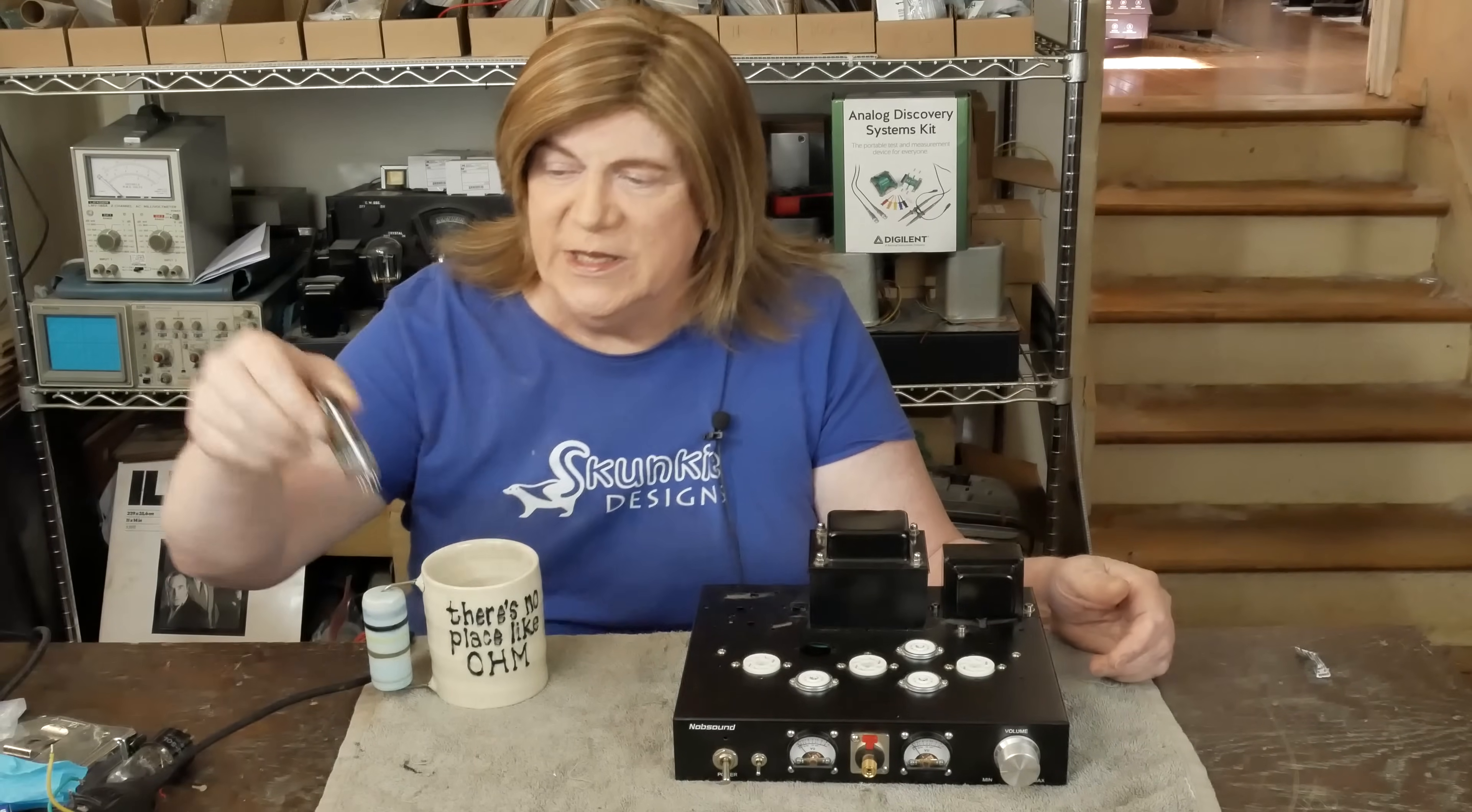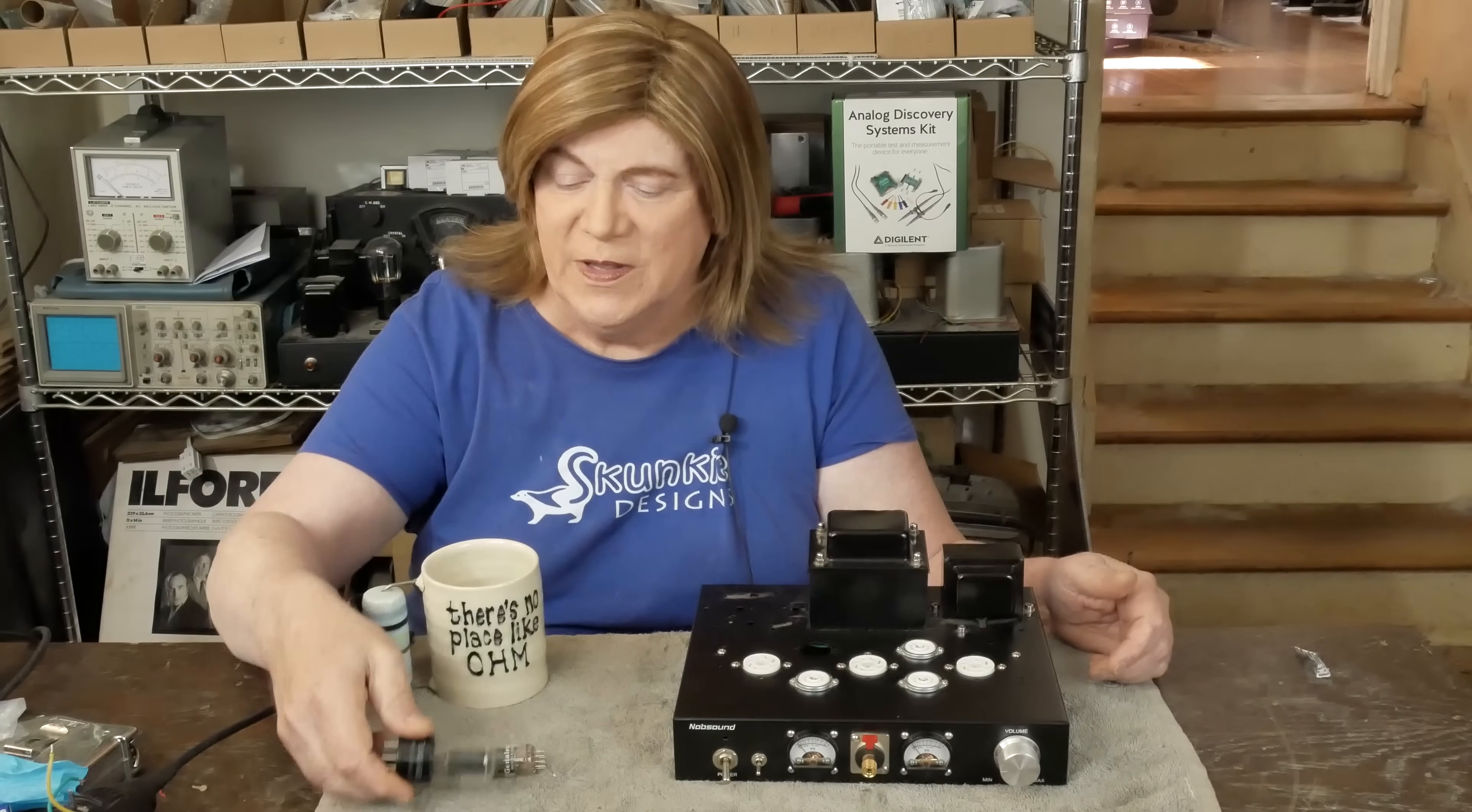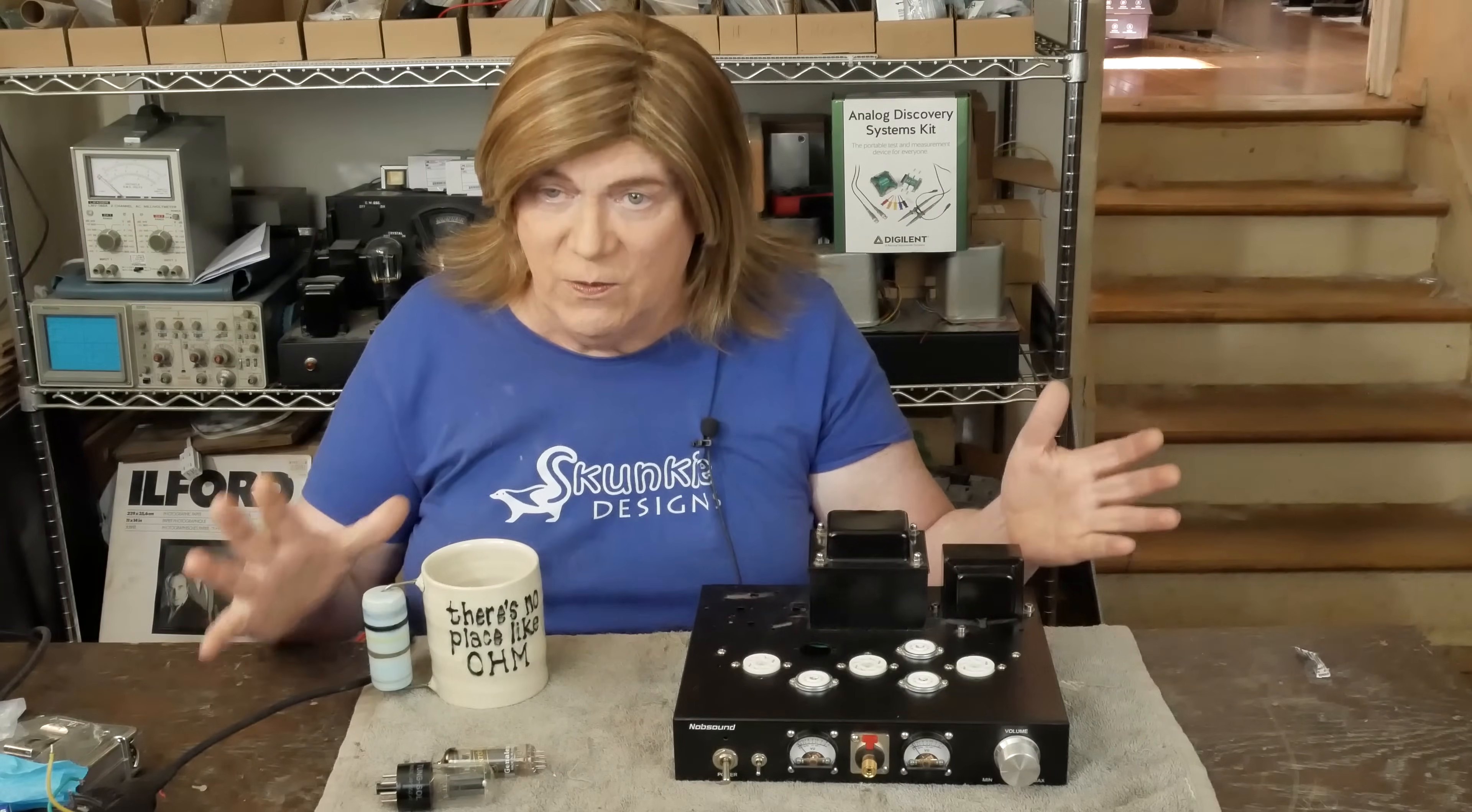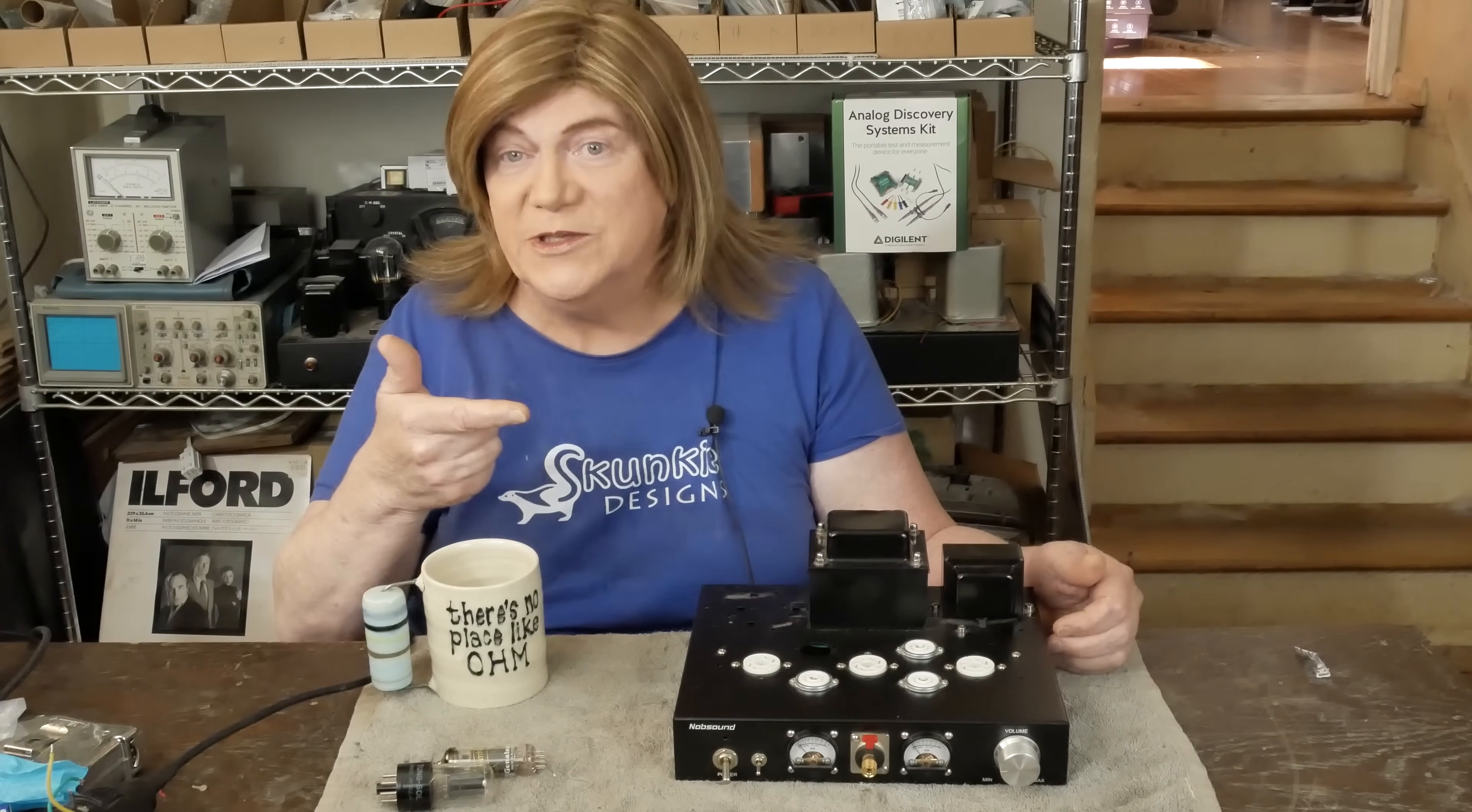We're going to be using these EL84. I've got a pair of these Gold Lions that we're going to be using, and then we've got a 6SF5 that we're going to be using for the driver tube. And I'm going to show you the similarities and the differences between the two schematics and why we're using this design to rewire or rebuild this amp into a good sounding amplifier. So let's jump into it.